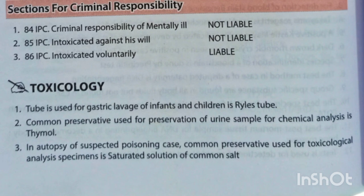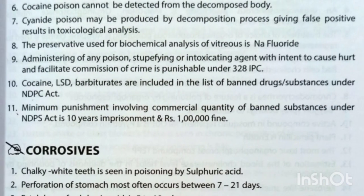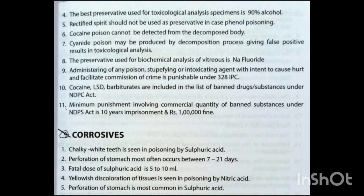The tube used for gastric lavage of infants and children is the Ryle's tube. The common preservative used for preservation of urine sample for chemical analysis is thymol. In autopsy of a suspected poisoning case, the common preservative used for toxicological analysis specimens is saturated solution of common salt. The best preservative used for toxicological analysis specimens is 90% alcohol.